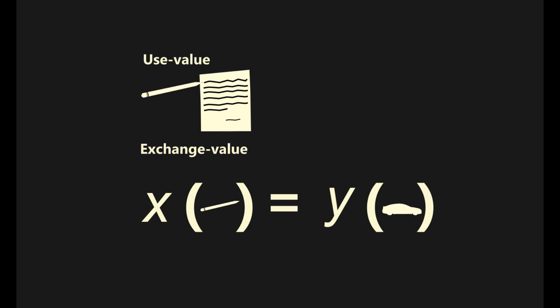When we say that x number of pencils equals y number of cars, we are referring to exchange value. The exchange value of a commodity, in Marxist economics, is determined by the labor time it took to produce it.